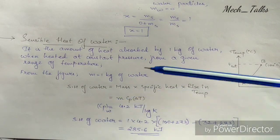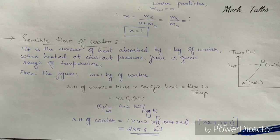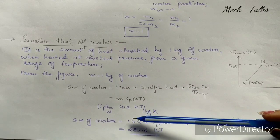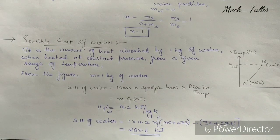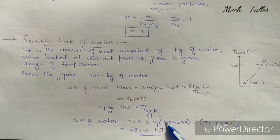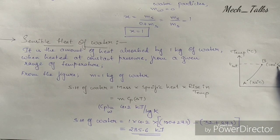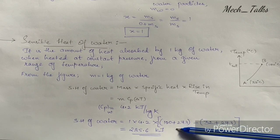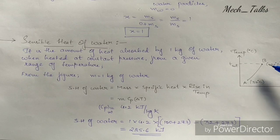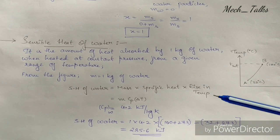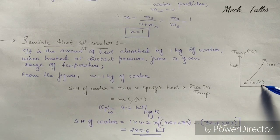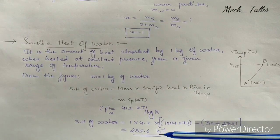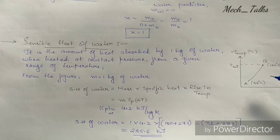The cp value, i.e., the specific heat of water, is 4.2 kJ/kg·K. Substituting the values: mass = 1 kg, cp = 4.2, and temperature difference = (100 + 273) − (32 + 273). Calculating this gives 285.6 kJ for this particular range of temperature for water.